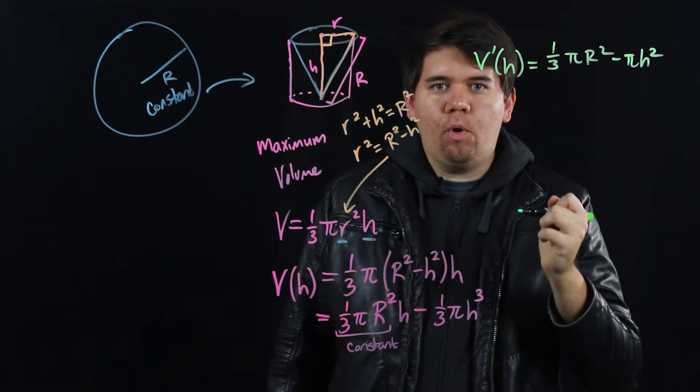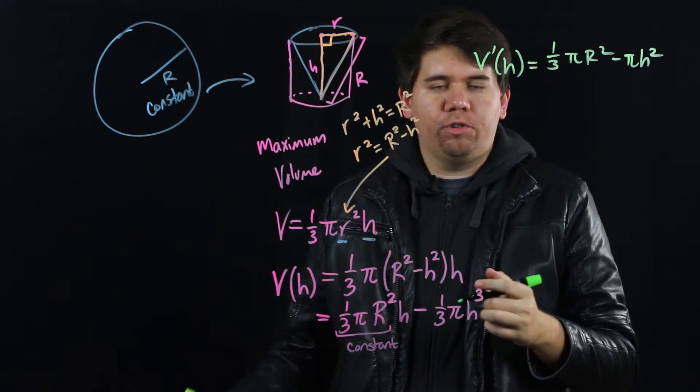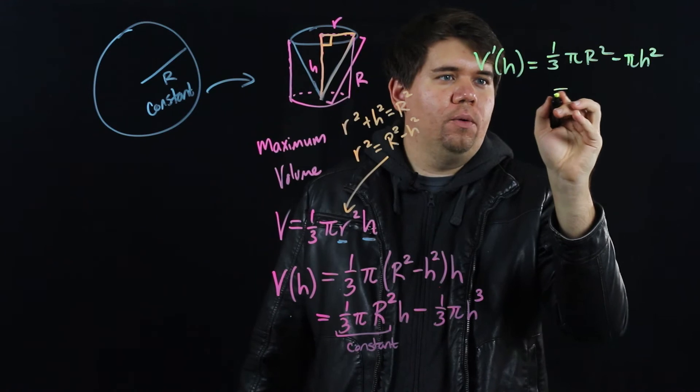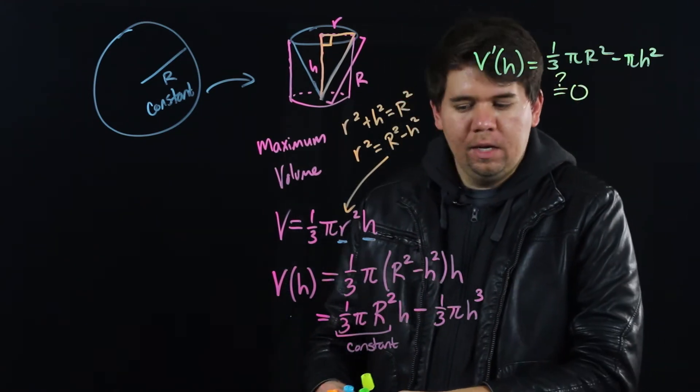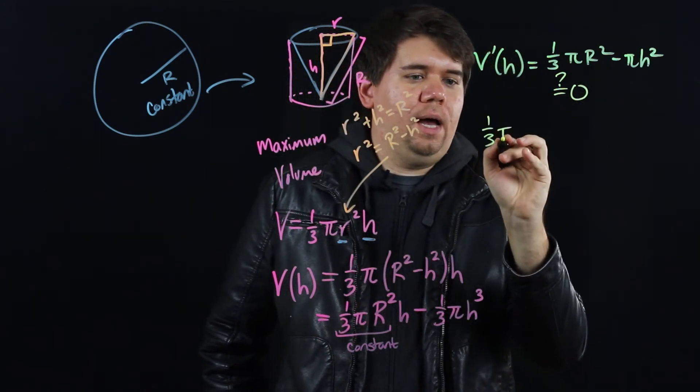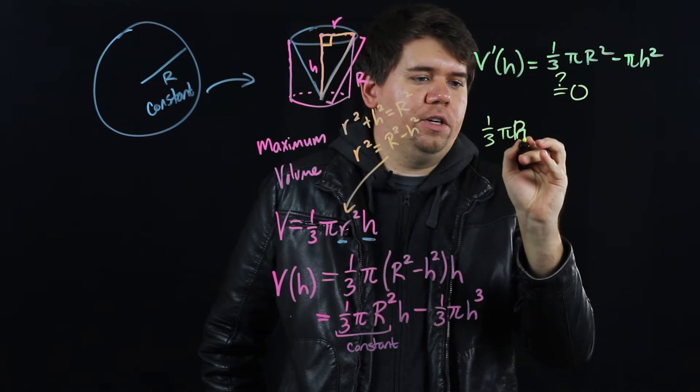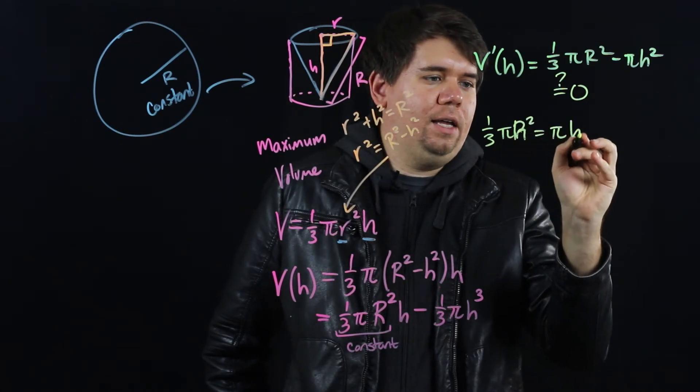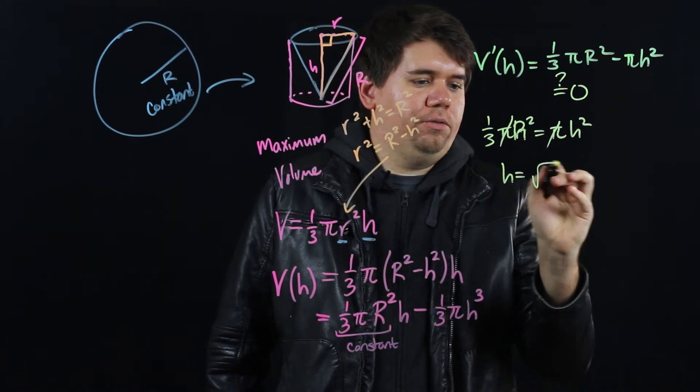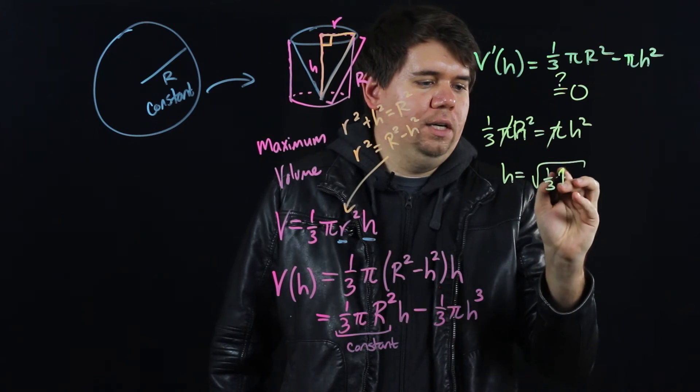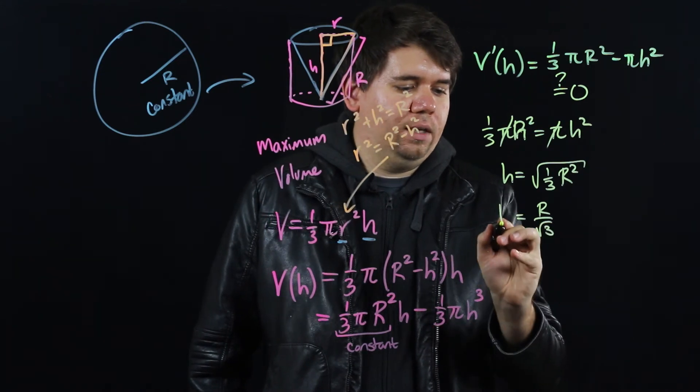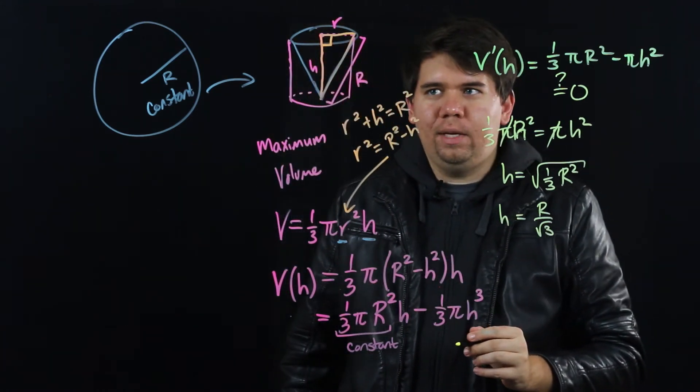I know that I'm at a maximum or a minimum whenever I'm at some critical value. I have to be at a critical value. So I need to solve when is this equal to zero. But that's not too bad. This is just going to be equal to zero when my one third pi R squared, big R squared, is equal to pi h squared. My pi's cancel, giving me that h is the square root of one third big R squared, which comes out to be just R over the square root of three. That is the height that gives me a maximum.